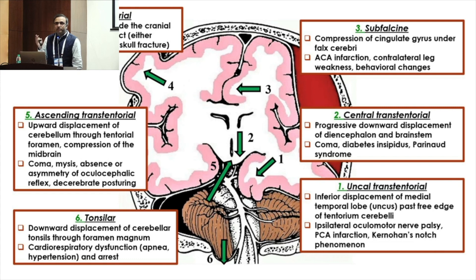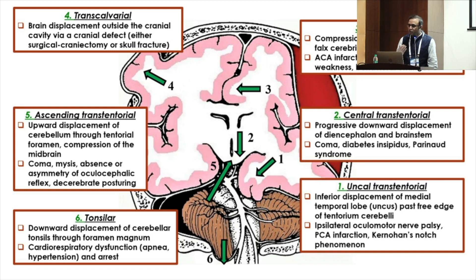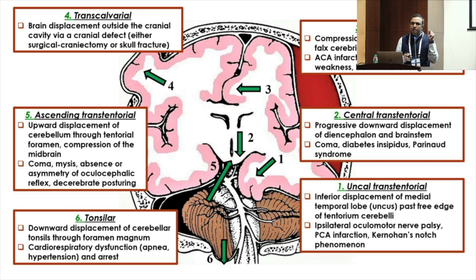There are six types of herniation — it's not just one. The most common is uncal transtentorial herniation, where the temporal lobe uncus herniates. Others include subfalcine, transcalvarial, ascending transtentorial. The most deadly of all is tonsillar herniation, in which global increase in brain edema causes downward displacement of the cerebellar tonsils through the foramen magnum, subsequently compressing the vital centers of the brainstem.